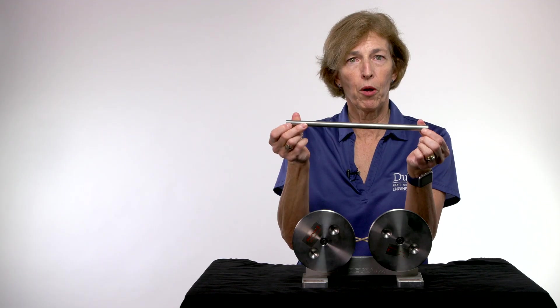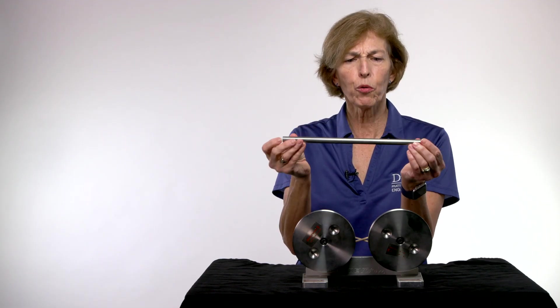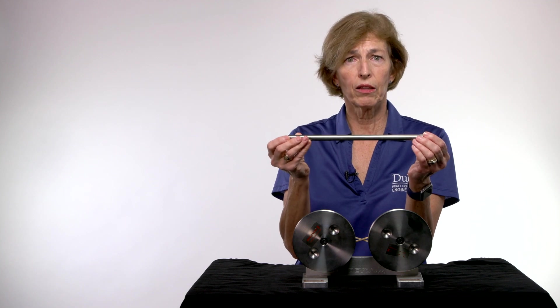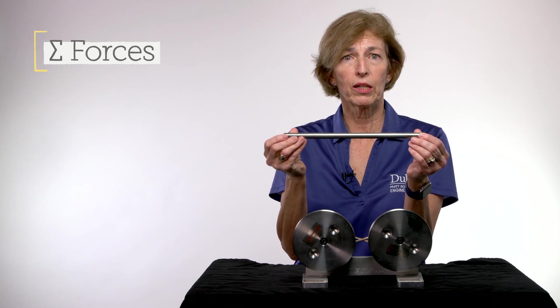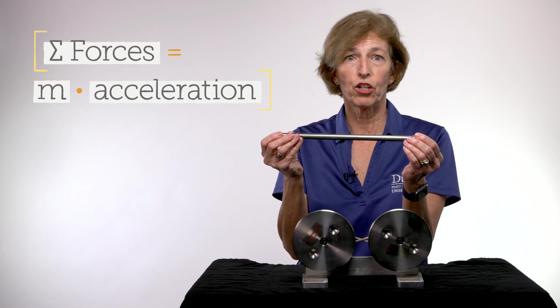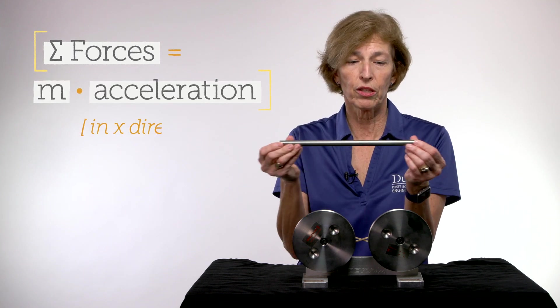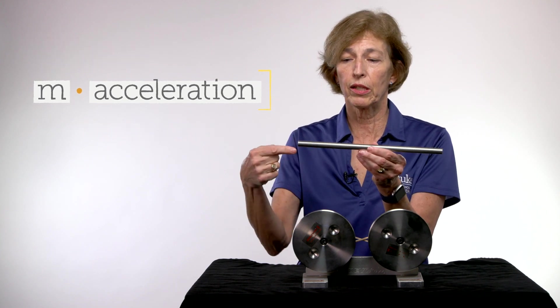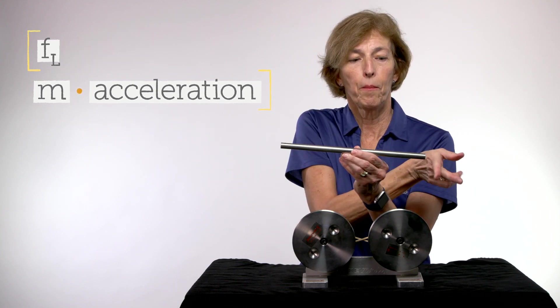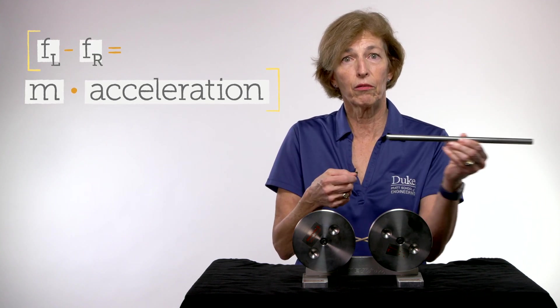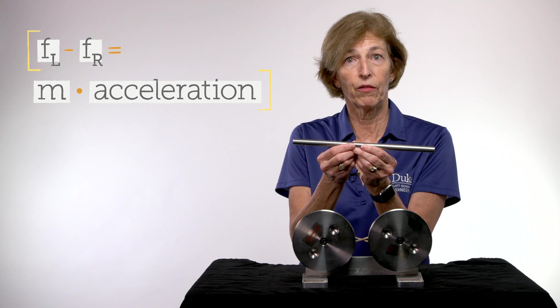So we have a free body diagram of the bar, and now we're ready to apply our laws, our physics laws. Newton's second law says that the sum of the forces acting on the bar is equal to the mass times acceleration of the bar in a certain direction. So we're looking in the horizontal direction, so we will sum the forces. F sub L minus F sub R is equal to M times the acceleration, which is the second derivative of X.